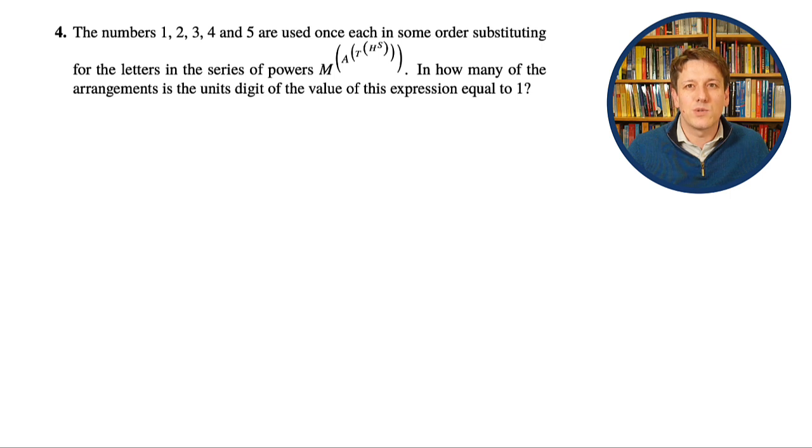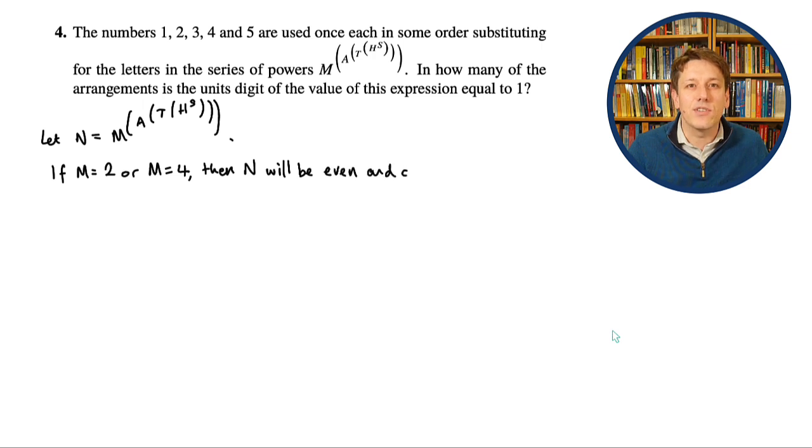The key to this one is really to split it into cases, and the order to do it is to think about m first, the ultimate base of all of these powers. So just to make things a bit easier, I'm going to call that tower of powers n, so I can refer to it more easily in my solution. The first cases I'm going to think about are if m equals 2 or m equals 4, because then I'll have 2 to the power of some large number or 4 to the power of some large number, but ultimately that n will be even, and so there's no way that it can end in a 1.